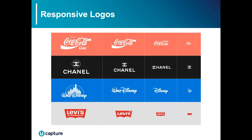A lot of institution logos feature things like a building, which is great and beautiful, but on a small mobile screen some of that detail can get lost. Logos are becoming more adaptive, containing several versions for mobile, tablet, and desktop devices. As you can see in the examples — Coke, Chanel, Disney — they're all moving towards responsive logos. The smallest version is what would appear on mobile, and you can still tell what it is, which makes it really cool.